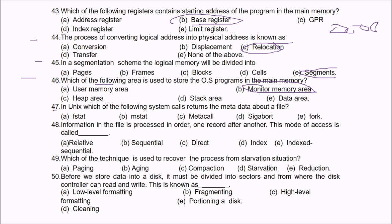Question 47: Which system call returns the metadata about a file? The answer is Fstat — this is the system call which returns the metadata about a file.